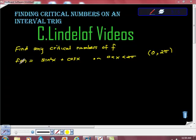So we have this question to find any critical values of f, given that f(x) is equal to sine squared x plus cosine x on the interval x is greater than 0, less than 2π.